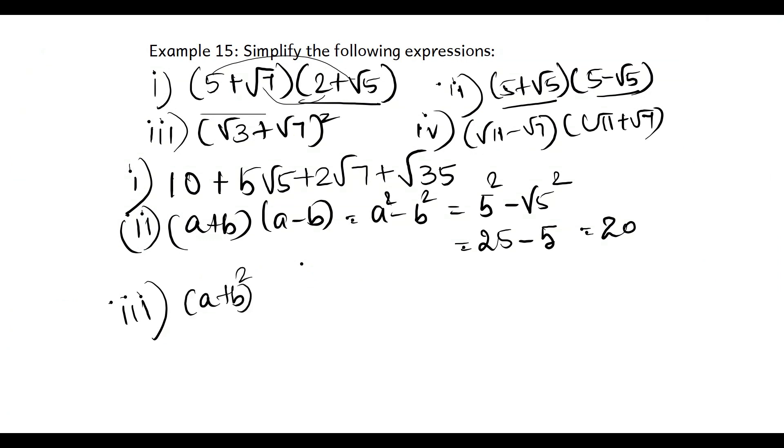Part iii: root 3 plus root 7 the whole square. This is like a plus b the whole square, which can be written as a square plus b square plus 2ab. This can be written as root 3 the whole square plus root 7 the whole square plus 2 into root 3 root 7.